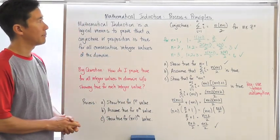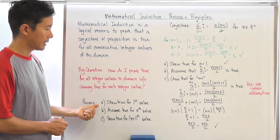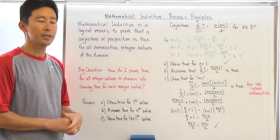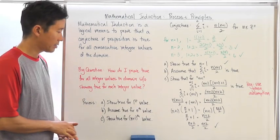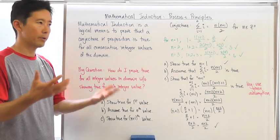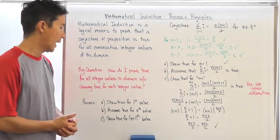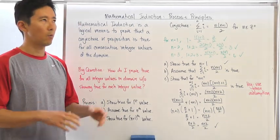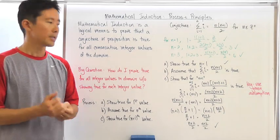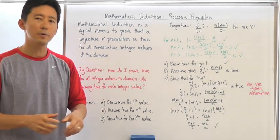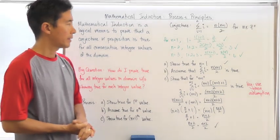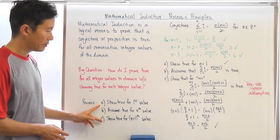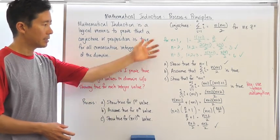This is how you do it using mathematical induction. You need to show that the proposition is true for the first integer value of the domain. After that, you assume it is true for the nth value. Then you need to show it is true for the n plus 1 value. The process is very strict, and you need to include this notation and vocabulary into the proof itself.